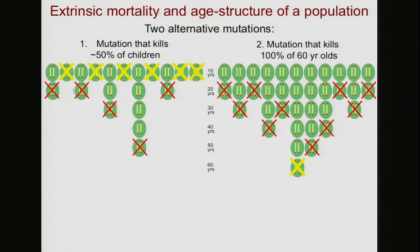So which of these two genes is more likely to persist in the population? The one that is harmful for children, or the one that is only harmful for very old individuals? Which would be removed most quickly by natural selection?